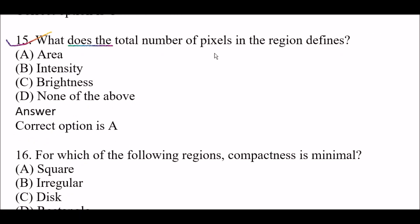Next question: What does the total number of pixels in a region define? Option A: area, Option B: intensity, Option C: brightness, Option D: none of the above. The right answer is Option A, area. The total number of pixels in a region defines the area.